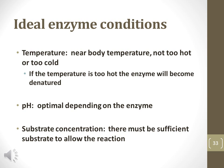Most enzymes have ideal conditions to perform. Temperature is most important — generally low temperature means slow enzymatic activity, while high temperature will degrade the enzyme, rendering it useless. Similarly, the concentration of hydrogen ions, or the pH, also affects enzymatic activity. Enzymes like pepsin work best at a pH of 2 in the stomach to digest proteins. Substrate concentration will also affect the rate of reaction. The higher the substrate concentration, the faster the reaction takes place.